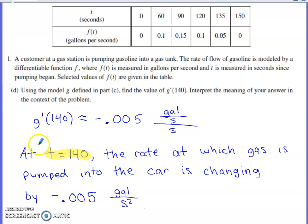A derivative is an instantaneous rate of change. So at t equals 140, the rate at which gas is pumped into the car is changing by negative 0.005 gallons per second per second or gallons per second squared.